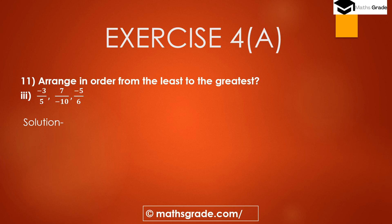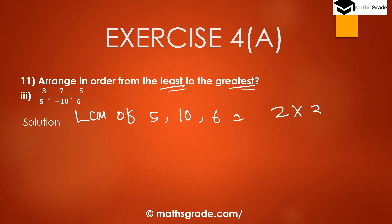Question number 1, third bit: arrange −3/5, 7/(−10), and −5/6 from the least to the greatest. Find the LCM of denominators 5, 10, and 6. Prime factorization of 6 is 2 × 3, and of 10 is 2 × 5. So LCM = 2 × 3 × 5 = 30. LCM of 5, 10, and 6 is 30.